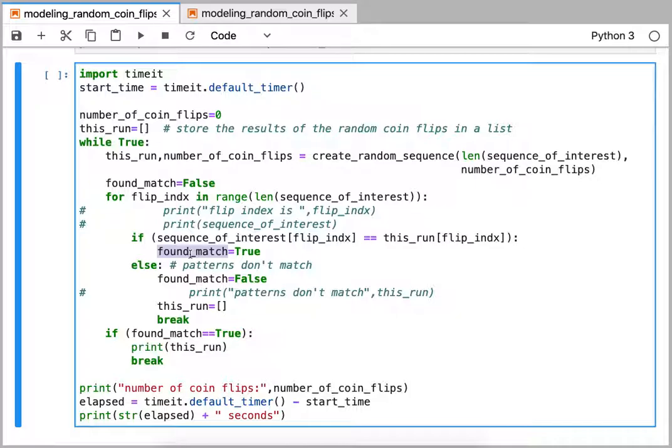Otherwise, if these are not the same at each element, we have an else statement that the pattern is broken, so we say that the found match is false. In which case we reset the sequence that we've randomly generated to be blank again, and then we break out of the for loop.